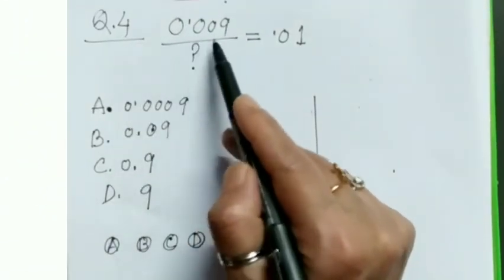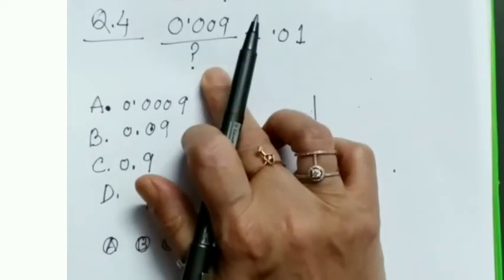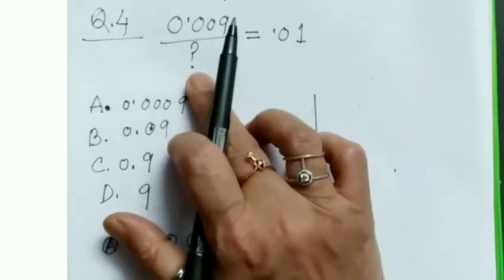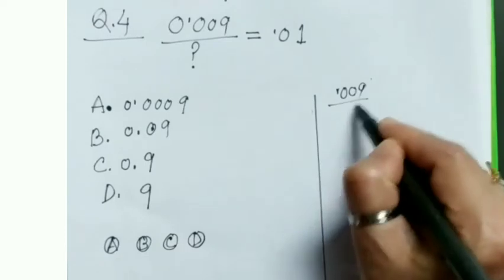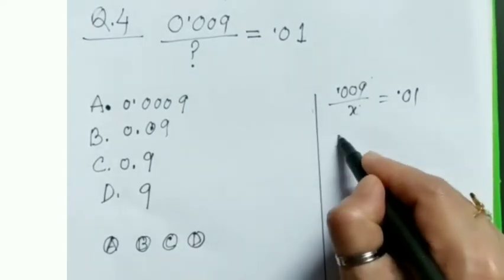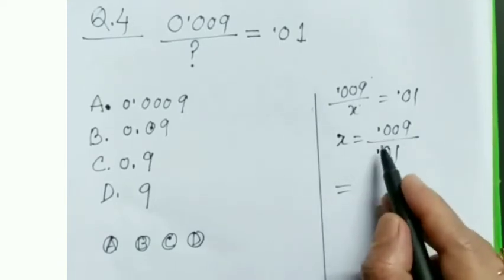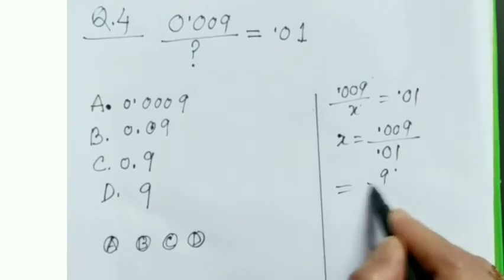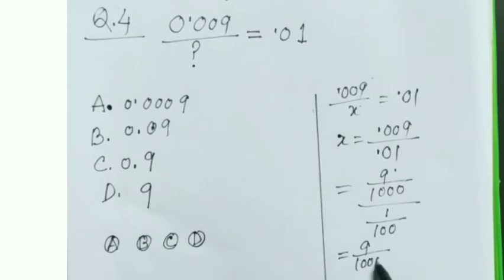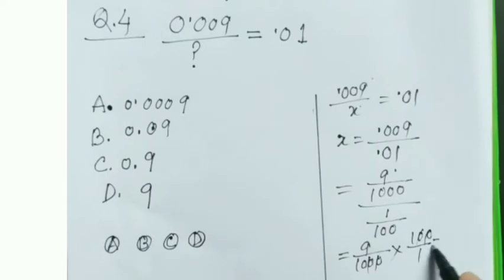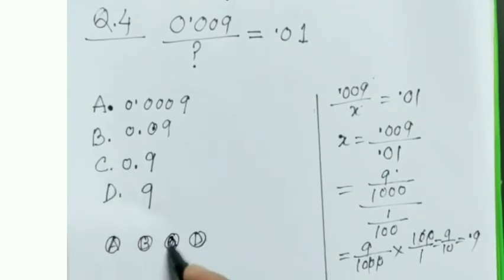Question number four: 0.009 divided by what equals 0.01? When something unknown is to be found, we think of it as a variable X. So 0.009 / X = 0.01, and by cross multiplication X = 0.009 / 0.01. After the decimal point there are 3 digits, so we write 9/1000 ÷ 1/100 = 9/1000 × 100 = 9/10 = 0.9. Therefore option C is the answer, and we bubble option C.